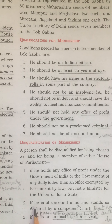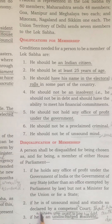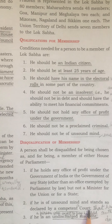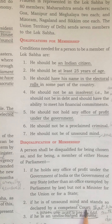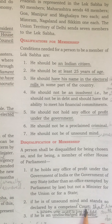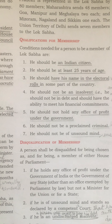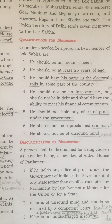Second disqualification: if he is of unsound mind and stands so declared by a competent court. A competent court is a court that has the authority to do a certain act. If a person is declared mentally unfit — that is, insane — by any competent court, then in that case also the person is disqualified from membership of Lok Sabha.